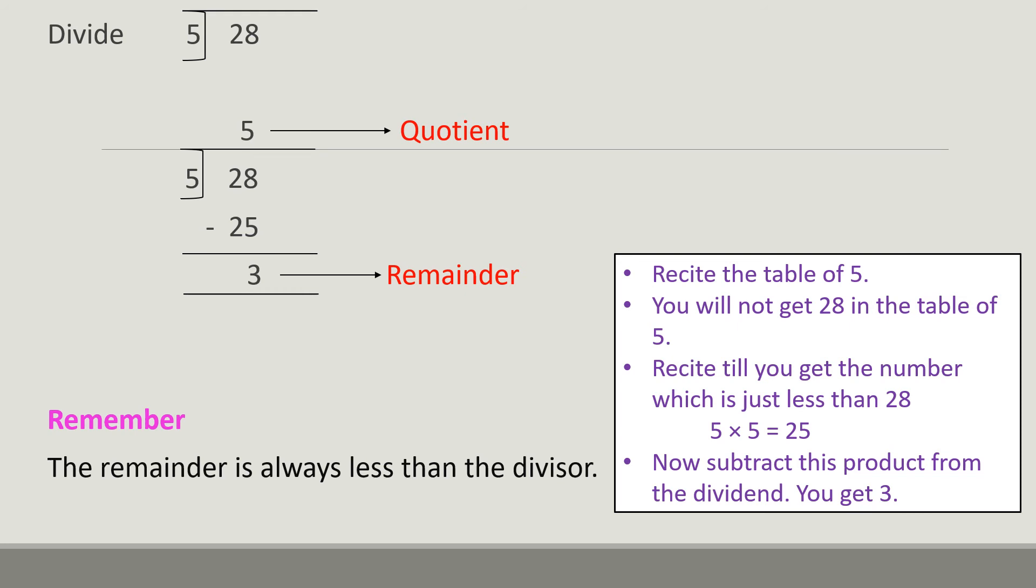Now subtract this product from the dividend. So 28 minus 25 we get 3. So our remainder is 3 and quotient is 5. Always remember that the remainder is always less than the divisor.